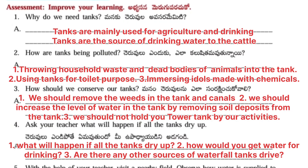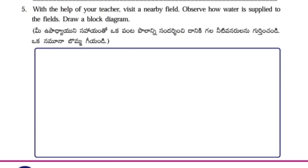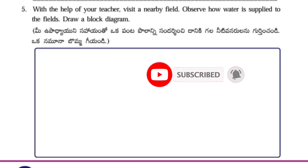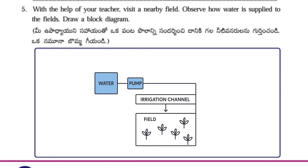Next question: How should we conserve our tanks? We should remove the weeds in the tank and canals. We should increase the level of water in the tank by removing soil deposits from the tank. Fifth one: With the help of your teacher, visit a nearby field. Observe how water is supplied to the fields. Draw a block diagram. Here I have given a block diagram.